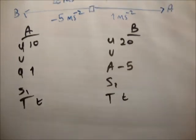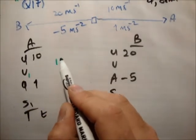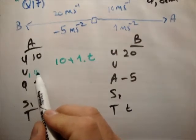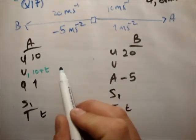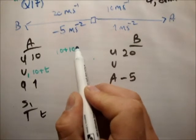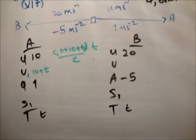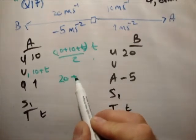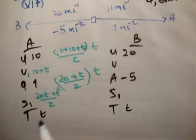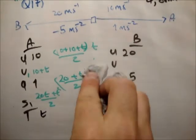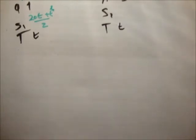So we'll use our usual UVAST formulae. V equals U plus AT. So V1 equals U, which is 10, plus 1 times T. So that is 10 plus T. And S equals U plus V, so that's 10 plus 10 plus T over 2 times T. So that's 20 plus T over 2 times T. So this is 20T plus T squared over 2. That's pretty straightforward.